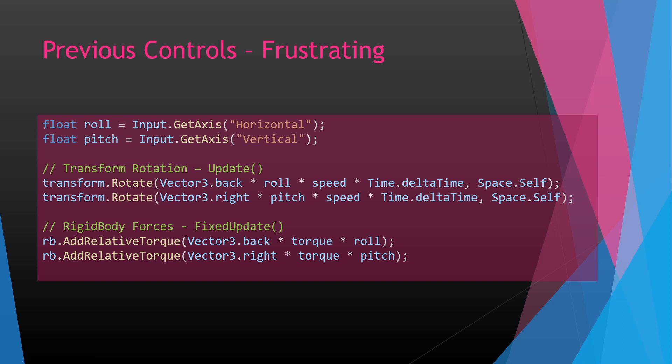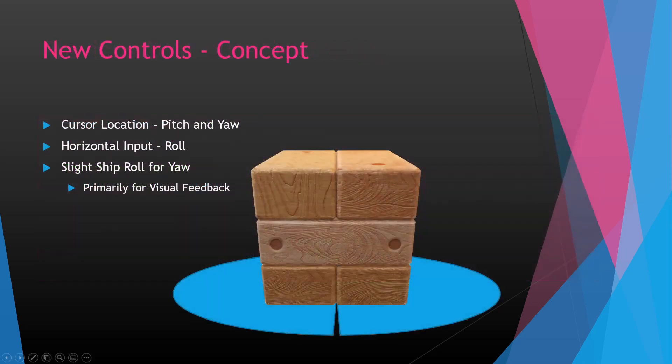What we're going to do next is a lot more complicated because we're adding many more elements. In the new controls concept, we're going to base our pitch and our yaw off of the cursor position, and our horizontal input will actually control our roll value. We also still want a slight roll when we're just yawing, because whenever you're moving an aircraft left to right, we're used to seeing a little bit of roll when it turns right or left.